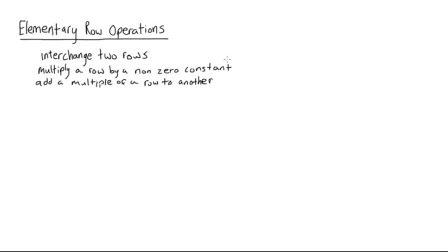In this video we're going to talk about how to use elementary row operations with matrices. What they're used for is to get a matrix into row echelon form or eventually into reduced row echelon form.